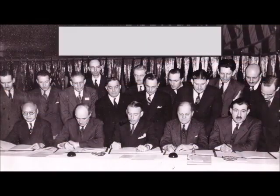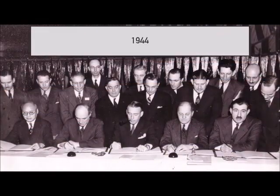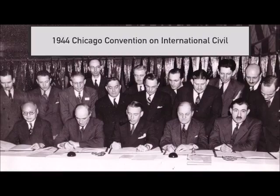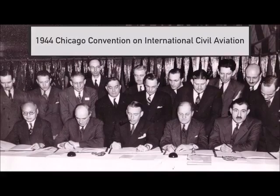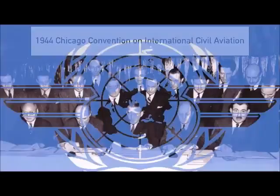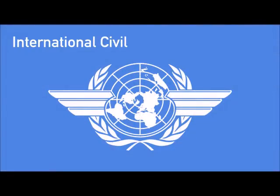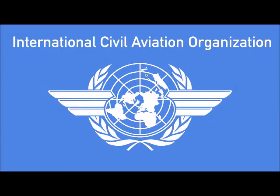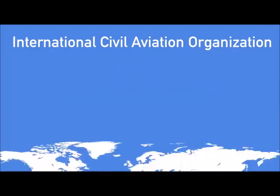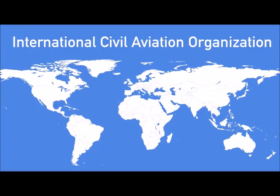The beginning of aviation agreements came with the 1944 Chicago Convention on International Civil Aviation. This convention established the UN oversight agency responsible for civil aviation — the International Civil Aviation Organization. The ICAO is recognized by every country worldwide except for Liechtenstein, Dominica, and Tuvalu.